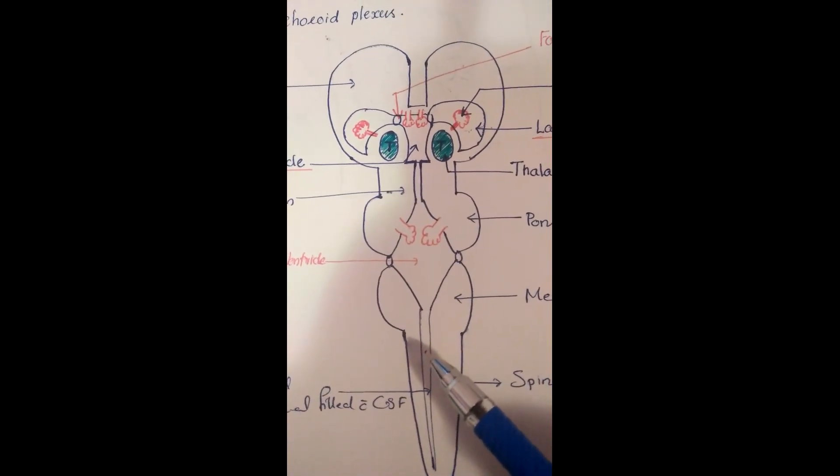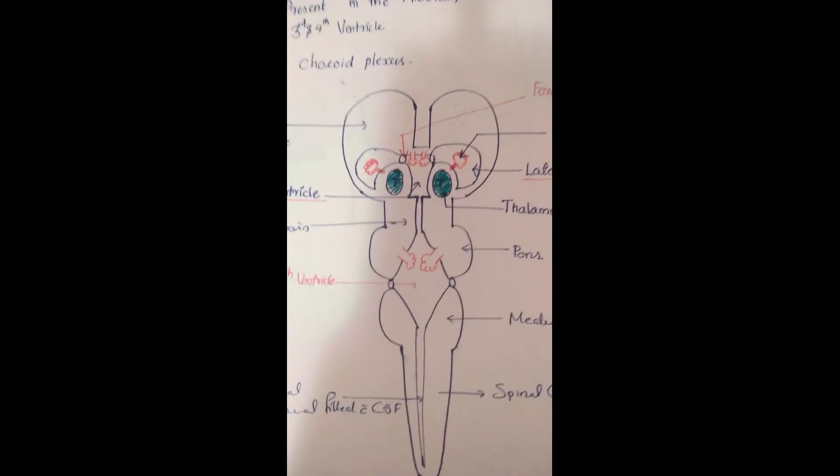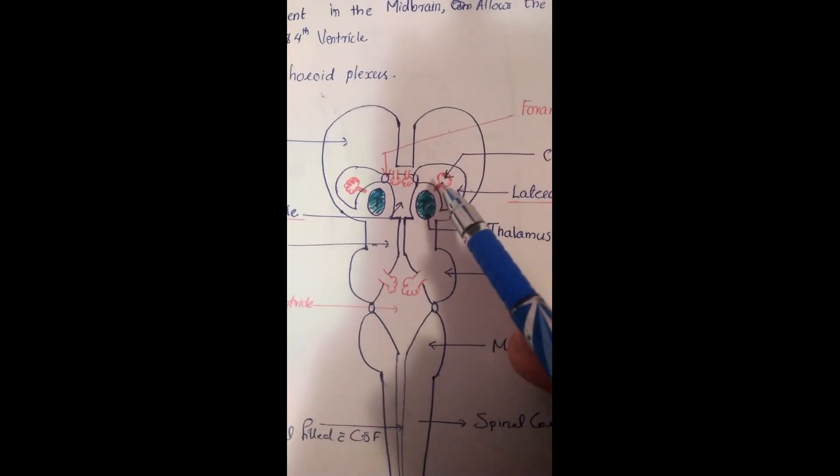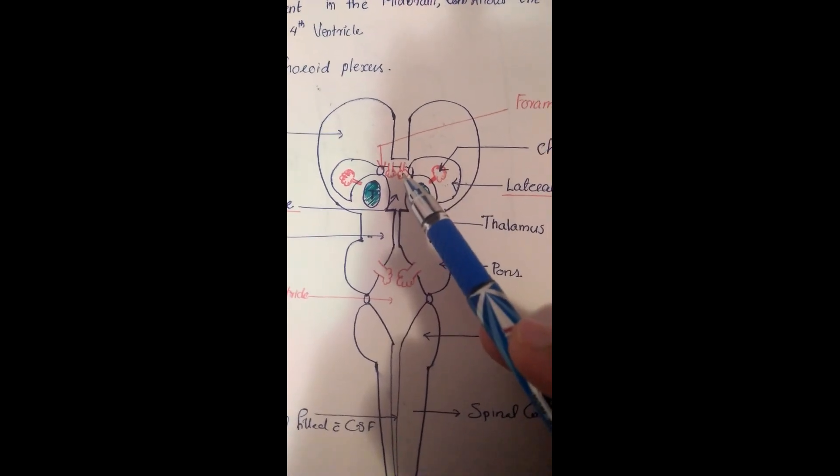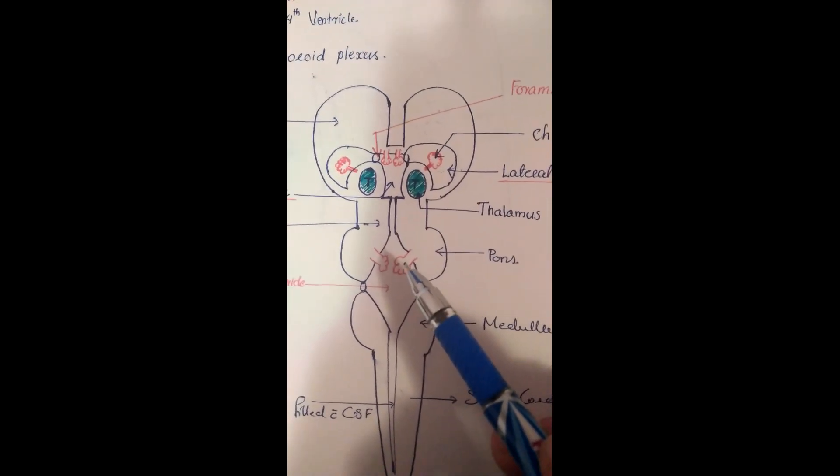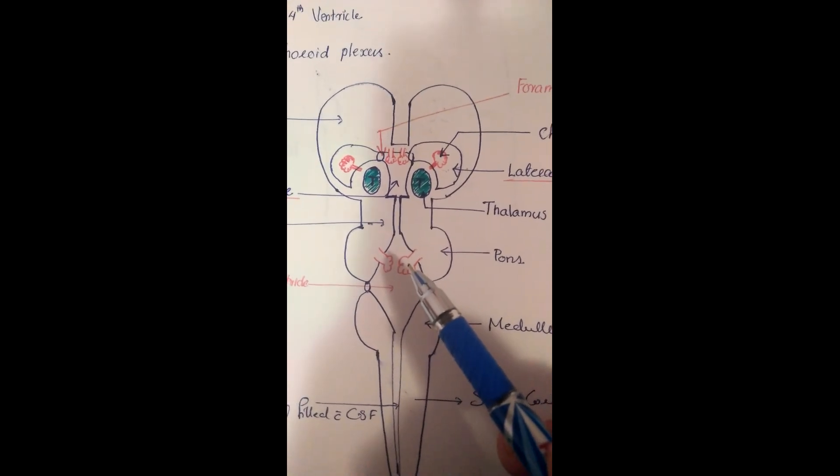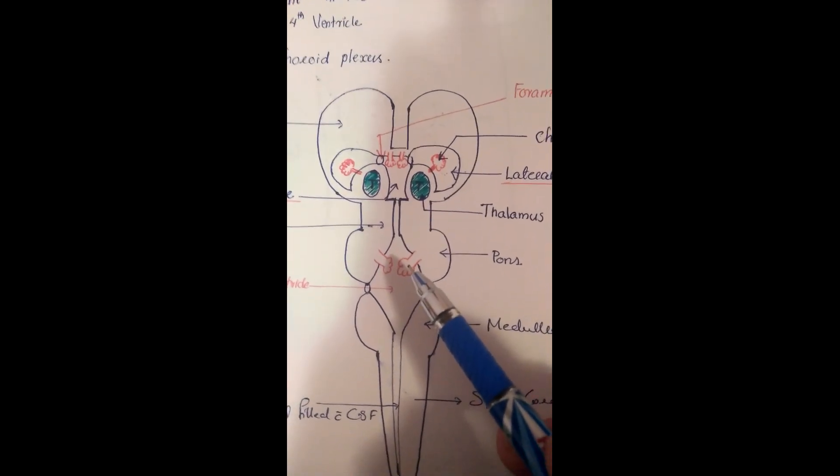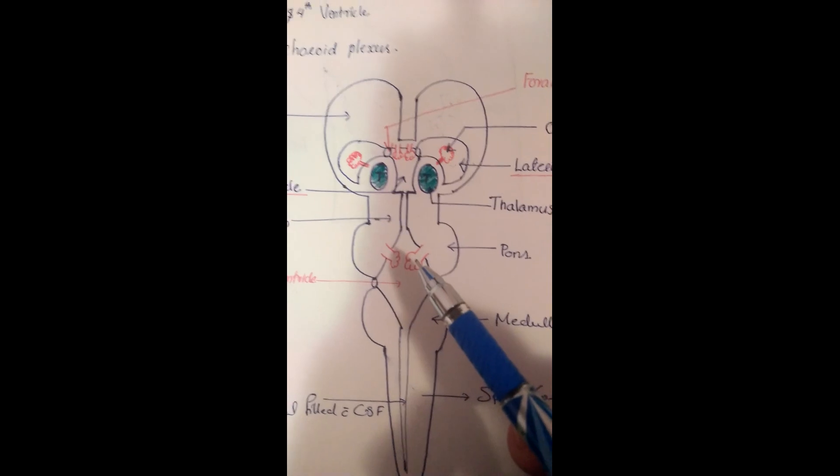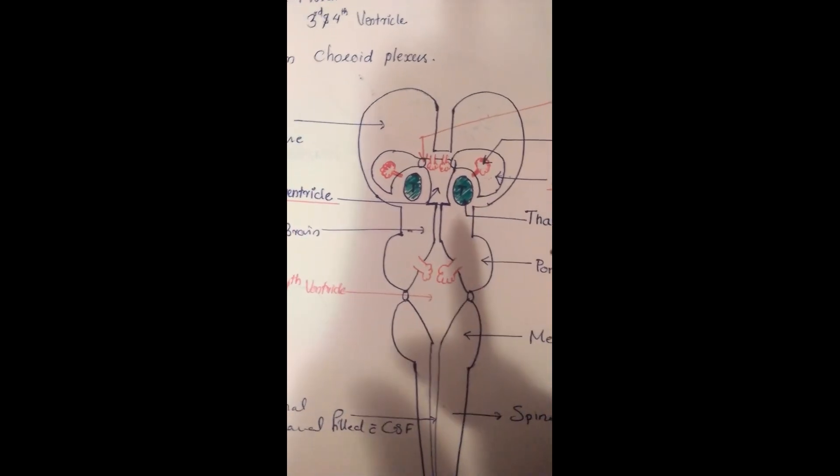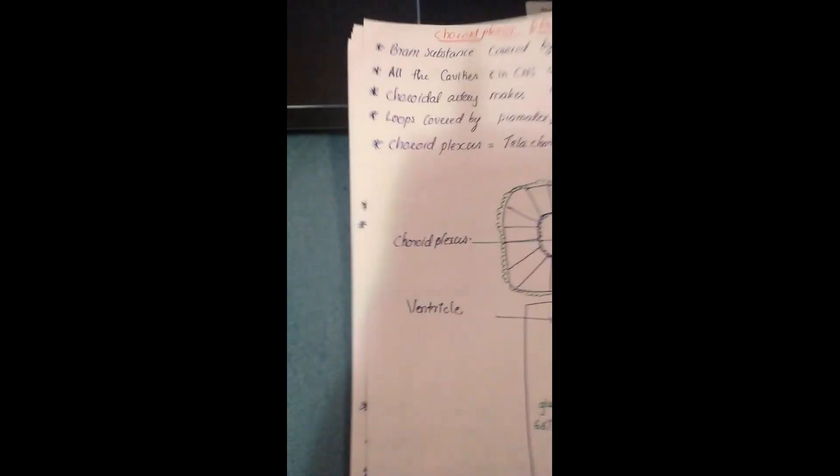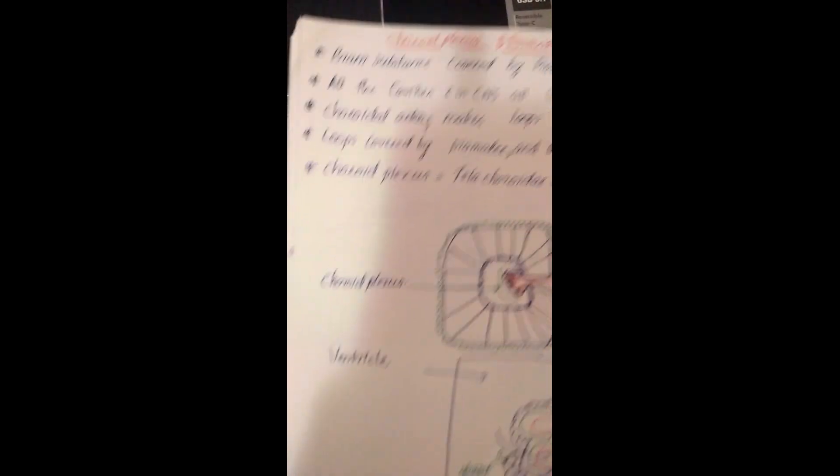Here is the spinal canal. Here is our choroid plexus which is present in the lateral ventricle and in the third ventricle. Here is the choroid plexus present in the roof of the fourth ventricle. The choroid plexus is responsible for the formation of cerebrospinal fluid. We will study the choroid plexus structure and how CSF forms.